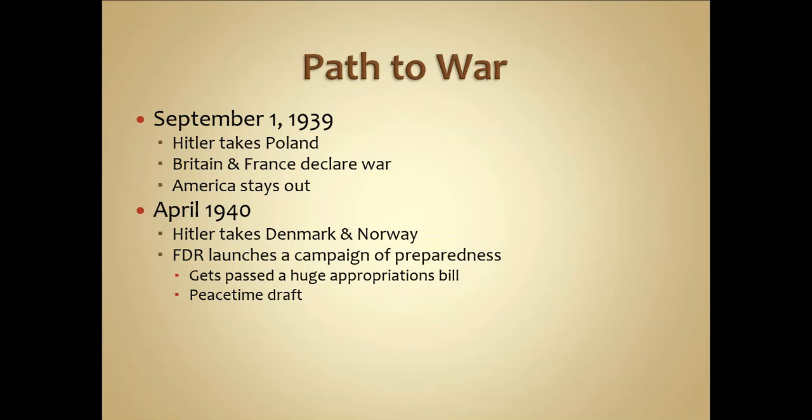France and Britain were prepared and waiting, but it got nicknamed the Sitzkrieg because nothing was happening. It became known as the phony war — they thought maybe Hitler was done, that he just wanted Poland, which had formerly been part of Germany, and wasn't looking to expand further. But Hitler, recognizing there would be heavy fortification right on the German-French border, began looking for an indirect way into French territory.